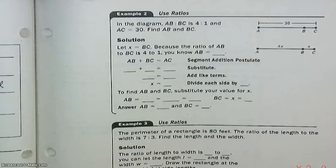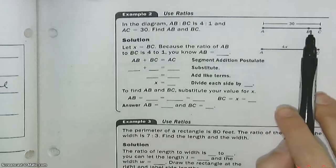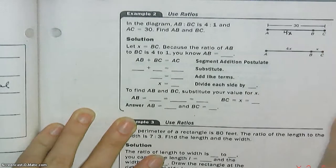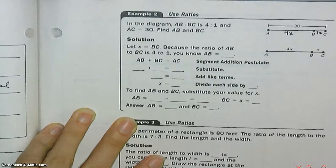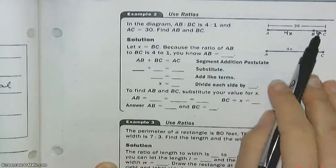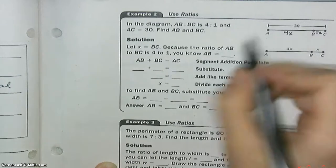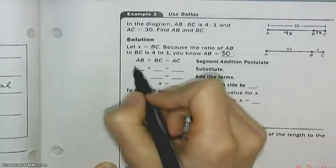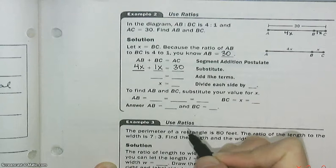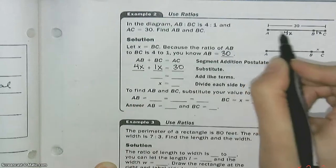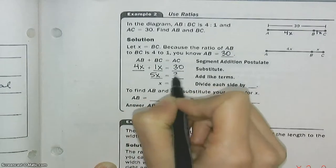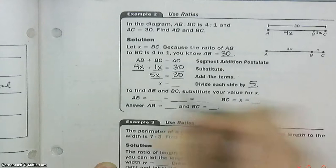Using ratios. In the diagram, AB to BC is 4 to 1. We're going to write this as 4 times something, and this is 1 times something. I don't know what that something is yet. That's what we're going to figure out. We know these two together have to make 30. The whole thing is 30. So 4x plus 1x equals 30. 5x equals 30.